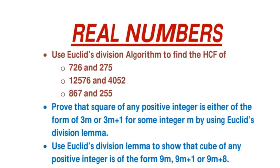Next question: by Euclid's division lemma, you may have to prove that the square of any positive integer is either of the form 3m or 3m plus 1 for some integer m. Also, use Euclid's division lemma to show that the cube of any positive integer is of the form 9m, 9m plus 1, or 9m plus 8. These types of questions are very important for your board exams.